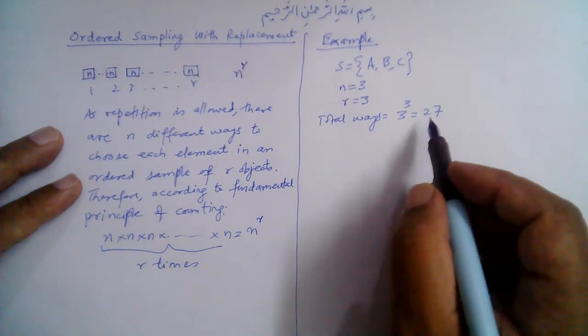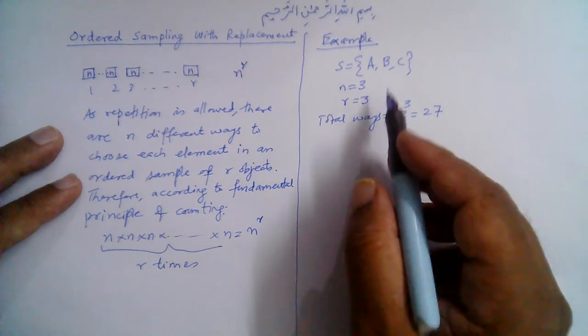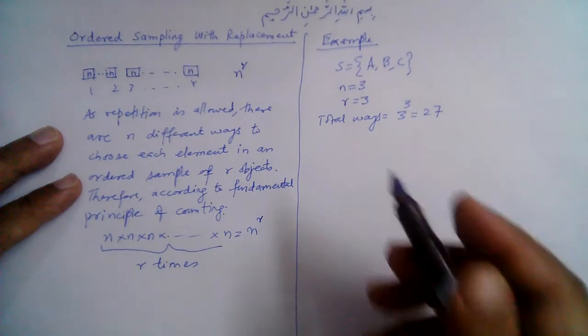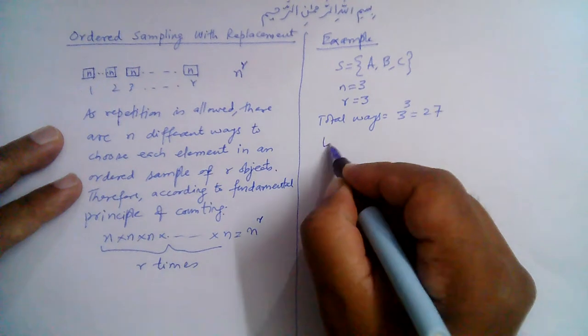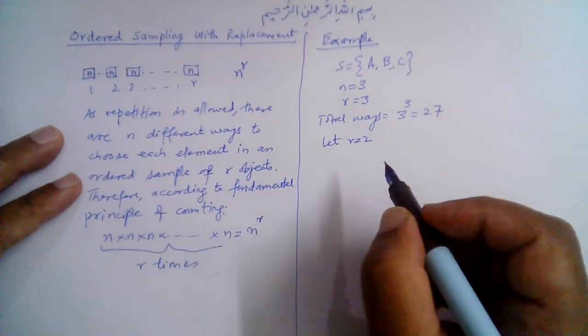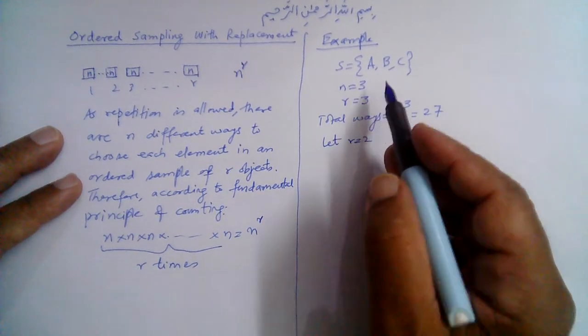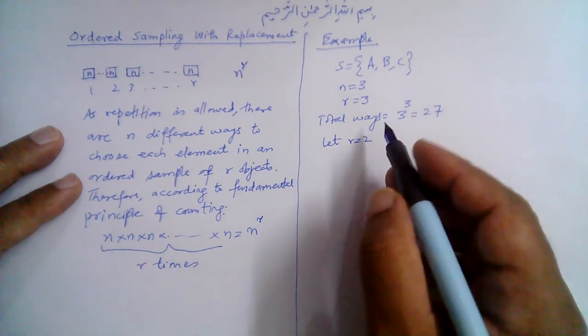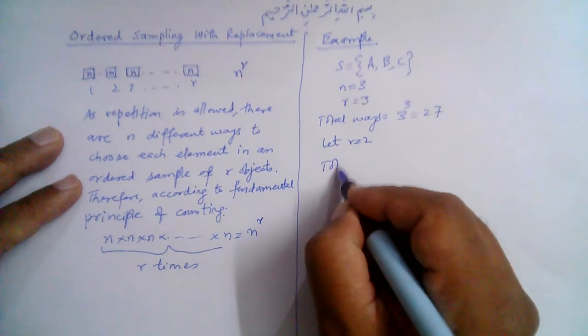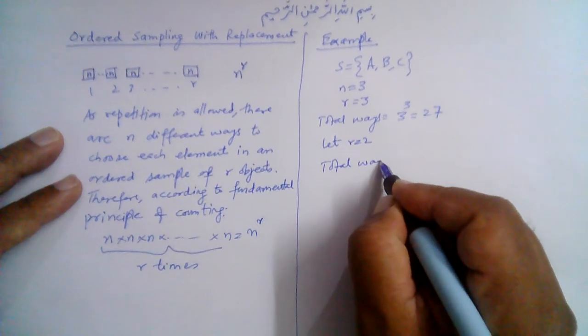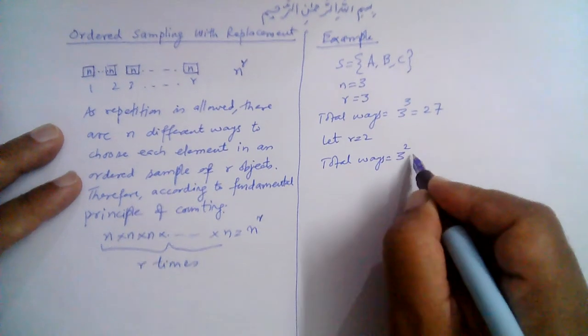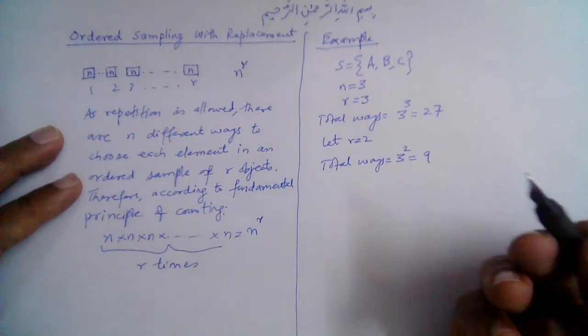This is quite a large number to write down here individually for all these possible arrangements, so let's consider r is equal to 2. Let r is equal to 2, which means that we take only two objects at a time, and then the possible arrangements is 3 raised to power 2, so that is 9.